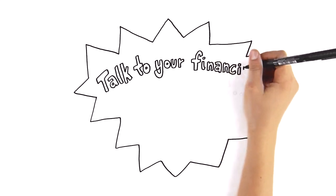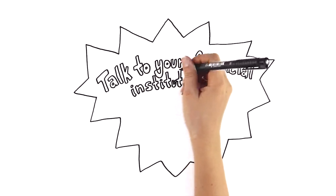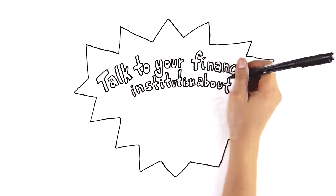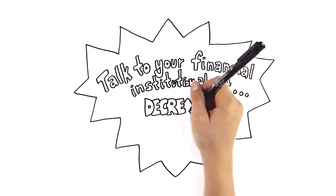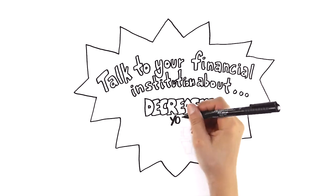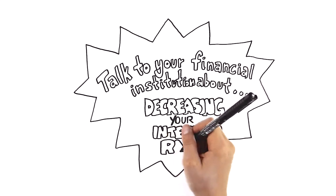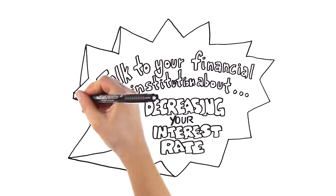Going back to our example of the $10,000 in debt, if you were able to not just increase the payment by $200, but also reduce the interest rate to 8%, you'd be out of debt in 28 months and save $4,827 in interest.